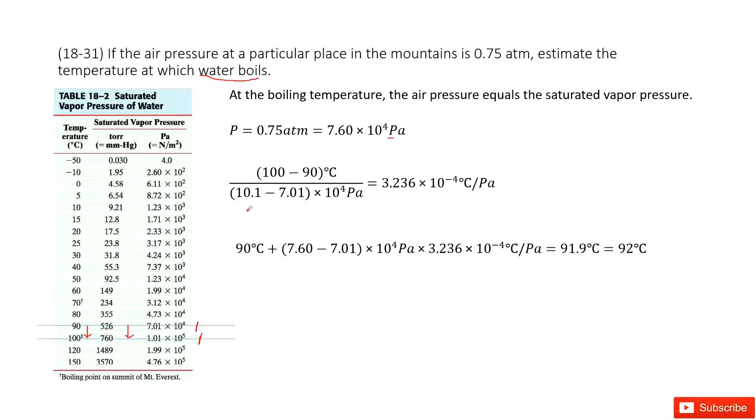Slope for the increasement, we can see final temperature 100 minus initial 90 degrees, and then divided by the difference in pressure. Then we get the slope for the increasement as this number, degree per Pascal.